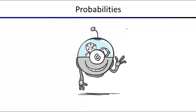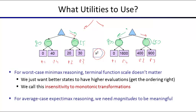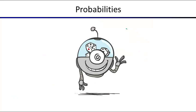We'll cover utilities in the second half of lecture. For probabilities: in minimax we didn't need to worry about them, but here we will. When we say utility, it's the value associated with the end state of a game — a number at the very bottom of the tree. Starting next lecture, for about ten lectures, we'll be doing probability every single lecture. But we need a little bit of it right now.